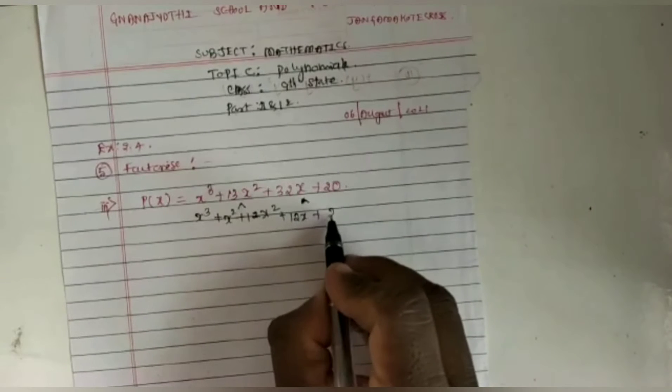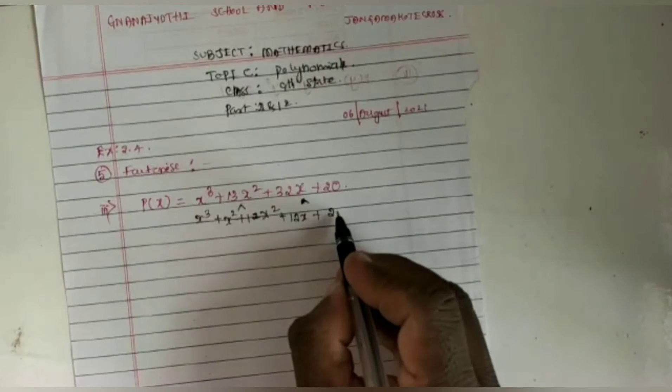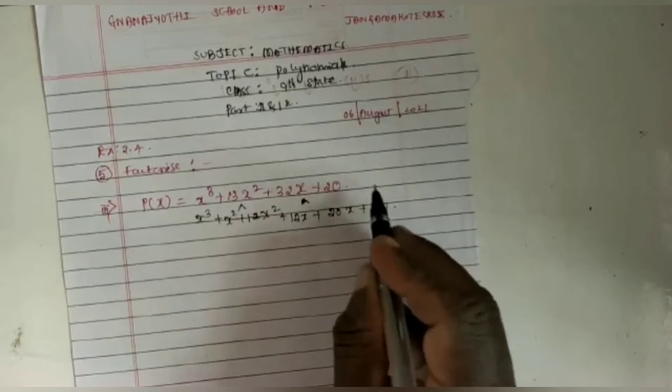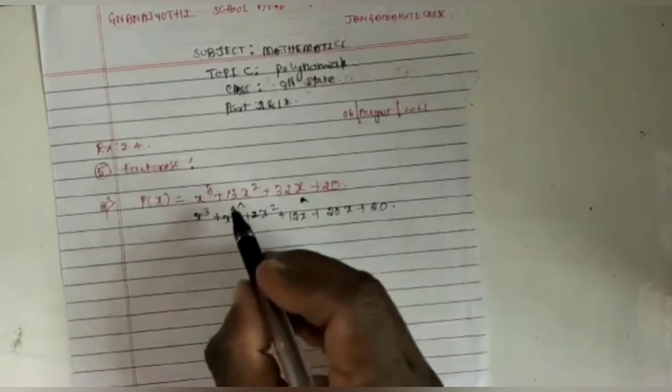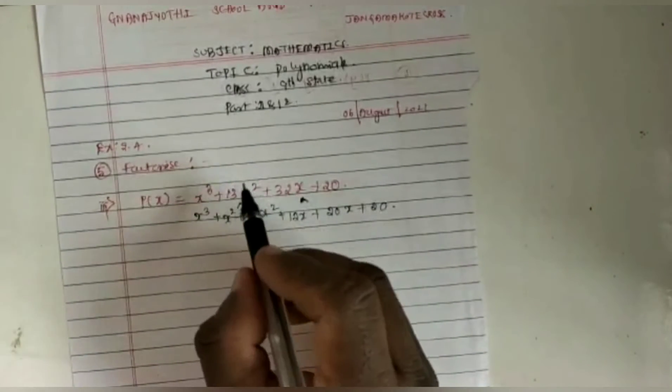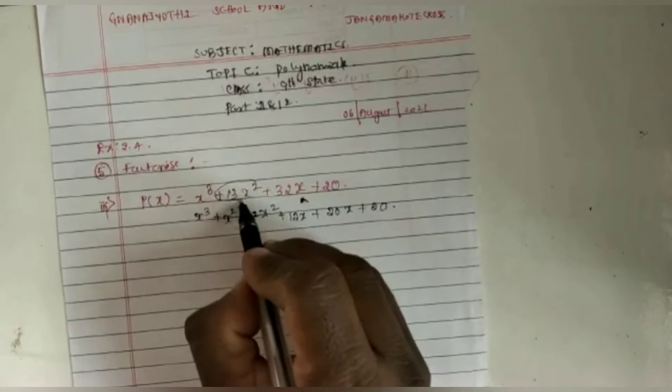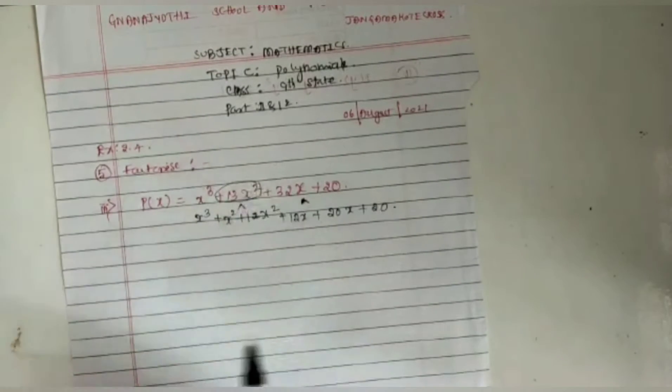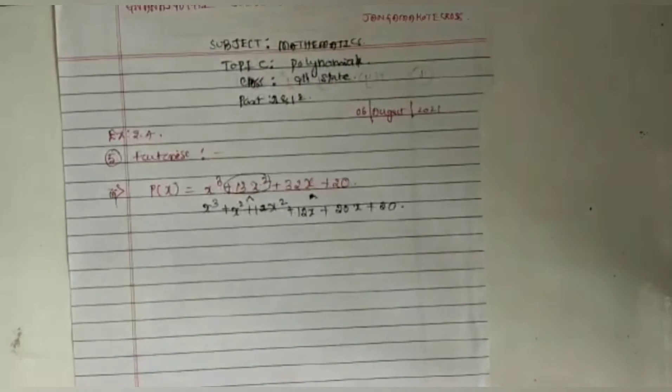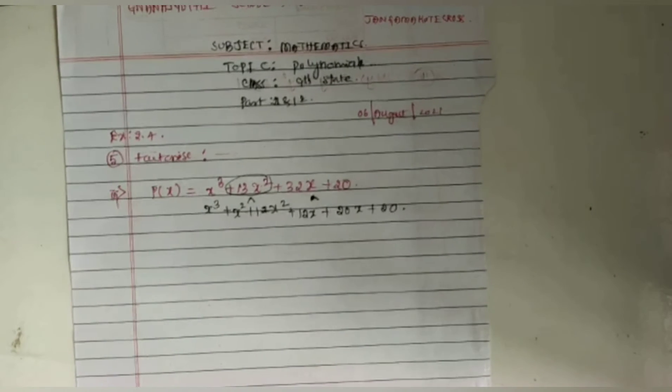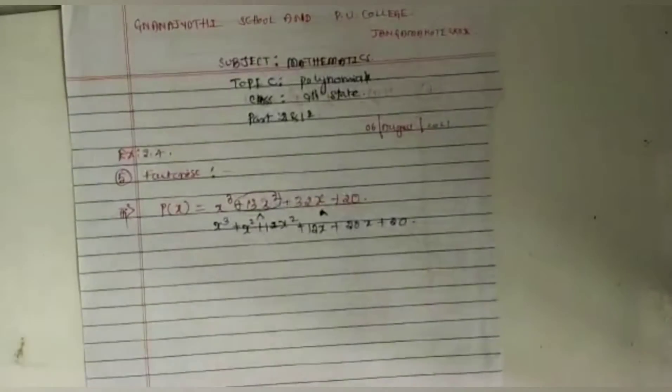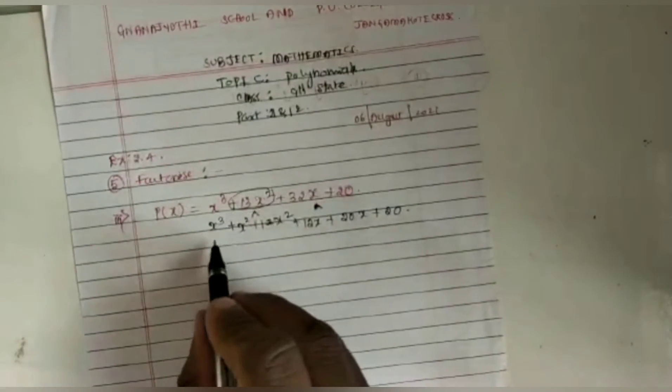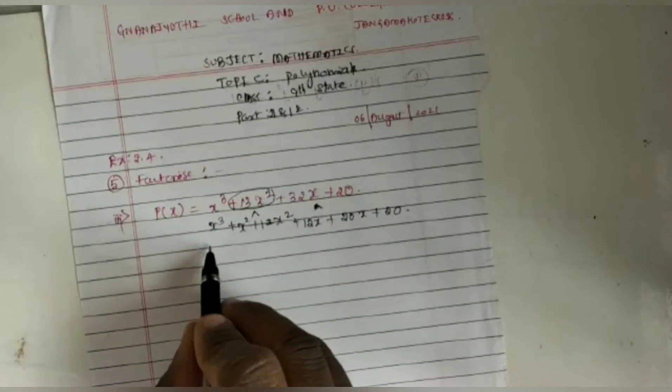Plus 12x plus 20x plus the constant term 20. So here I am going to split the middle term. 13x² can be written as x² + 12x², and 32x can be split as 12x + 20x + 20. Therefore, by grouping,